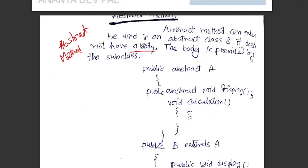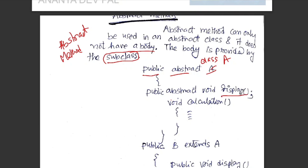The abstract method has no body. The body is provided by the subclass when we have to access the subclass. For example: public abstract class A, with public abstract void display. This is a method that has no content — just public abstract void display.